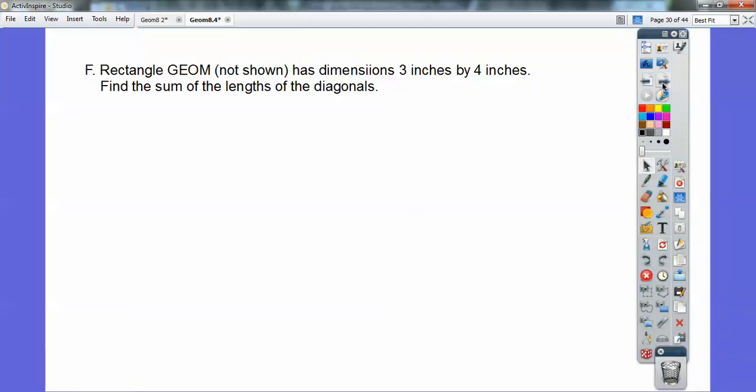Alright, okay, so here we go. Rectangle GEOM, not shown, has dimensions 3 inches by 4 inches. Find the sum of the lengths of the diagonals. Well, let's go ahead and draw that guy. There's my rectangle GOM. And they have to go in order, you guys. It has to either go clockwise, GEOM, or it has to go counterclockwise. I always choose clockwise. Has dimensions 3 by 4.